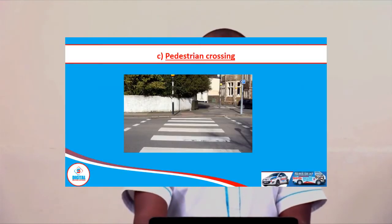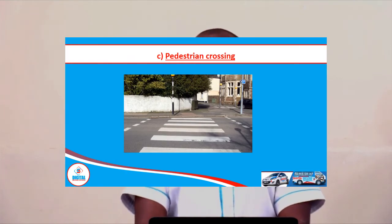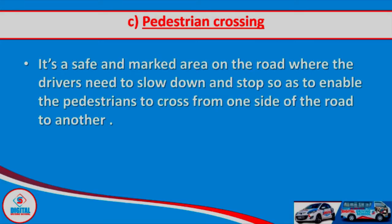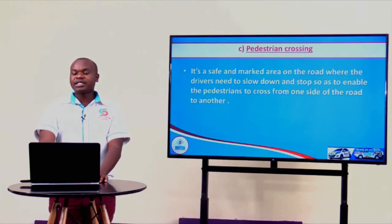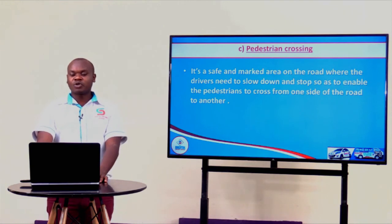Our next feature is the pedestrian crossing. Pedestrian crossing is a safe and marked area on the road where drivers need to slow down and stop so as to enable pedestrians to cross from one side of the road to another. It is an offence to stop at a pedestrian crossing as a driver. That area should only be left for the safe crossing of pedestrians.